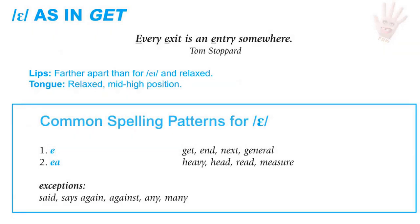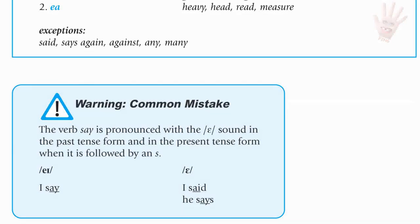E as in get. The lips are farther apart than for A and are relaxed. The tongue is also relaxed and in the mid-high position. Common spelling patterns: the letter E as in get, end, next, general; EA as in heavy, head, read, measure; and spelling exceptions including said, says, again, against, any, many.